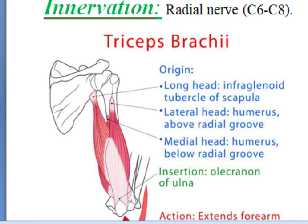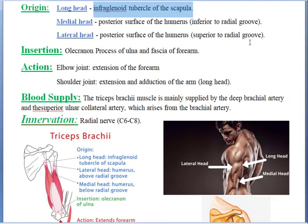The medial head gets its origin from the posterior surface of the humerus, inferior to the radial groove. The lateral head gets its origin from the posterior surface of the humerus, superior to the radial groove. So: the long head from the infraglenoid tubercle, the medial head from the humerus inferior to the radial groove, and the lateral head from the humerus superior to the radial groove.